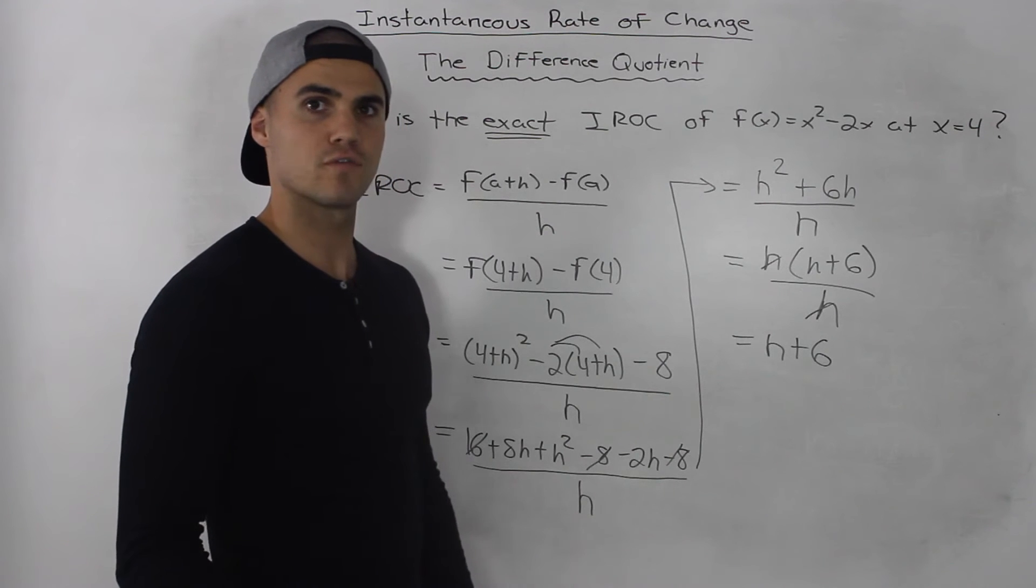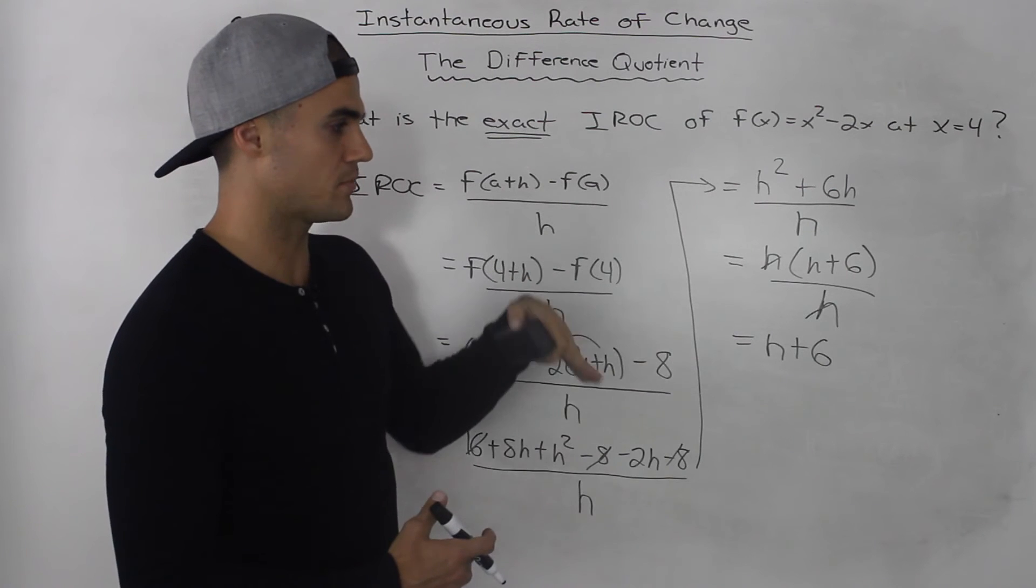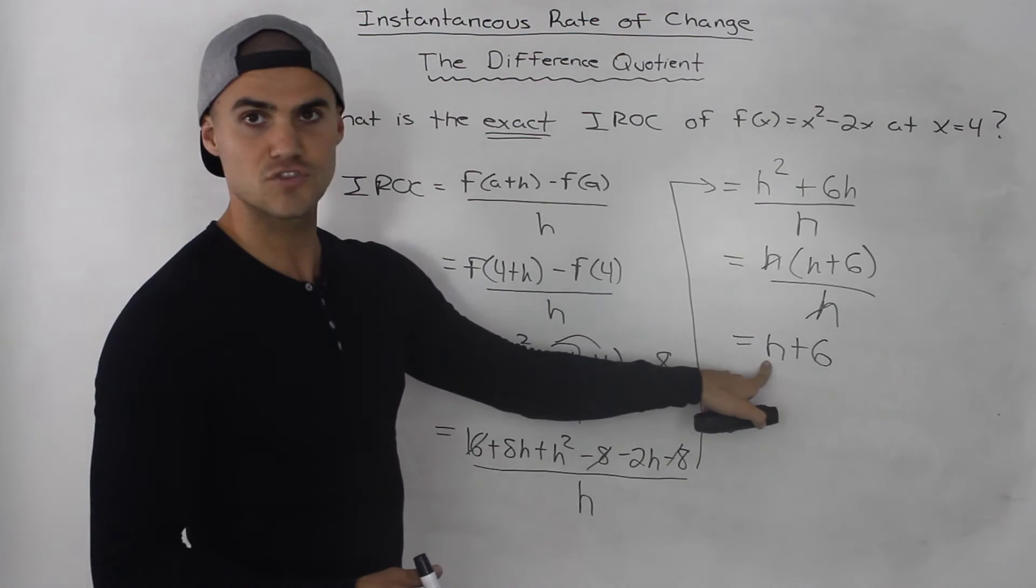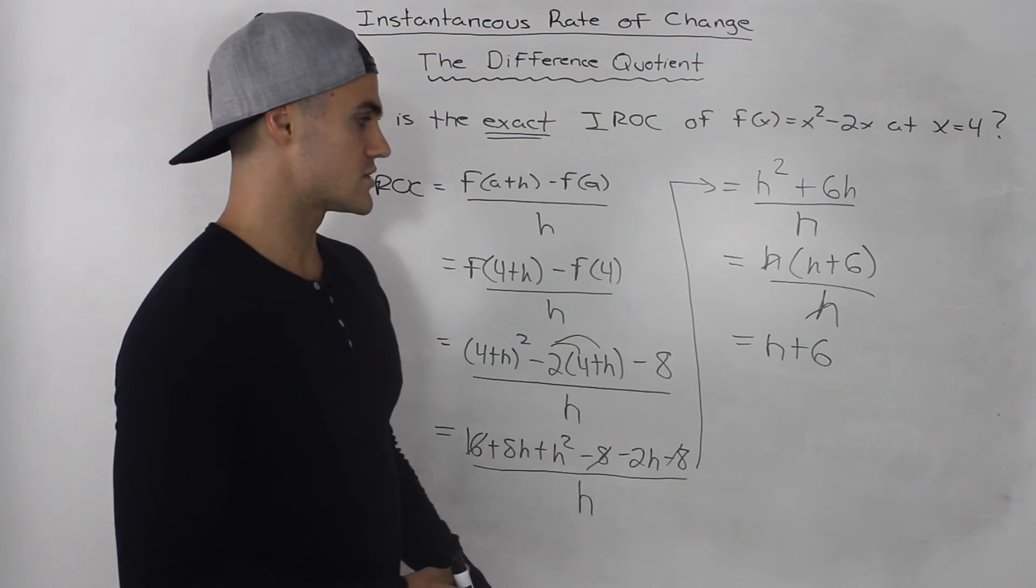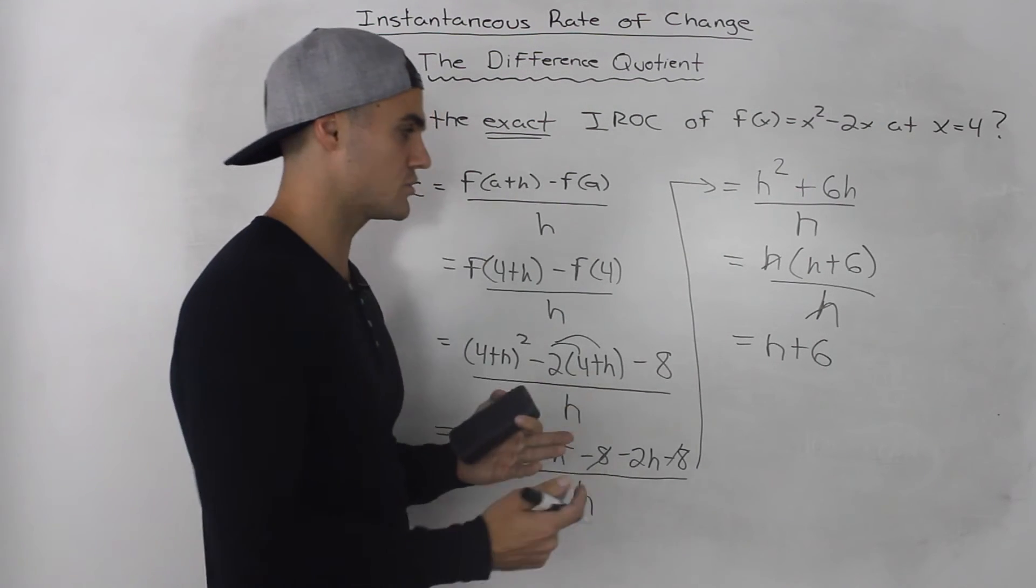And as we've mentioned before, to get the best approximation for the instantaneous rate of change, or for that slope of the tangent, we want the h value to be very small. So the smallest it can be is just really, really close to 0.